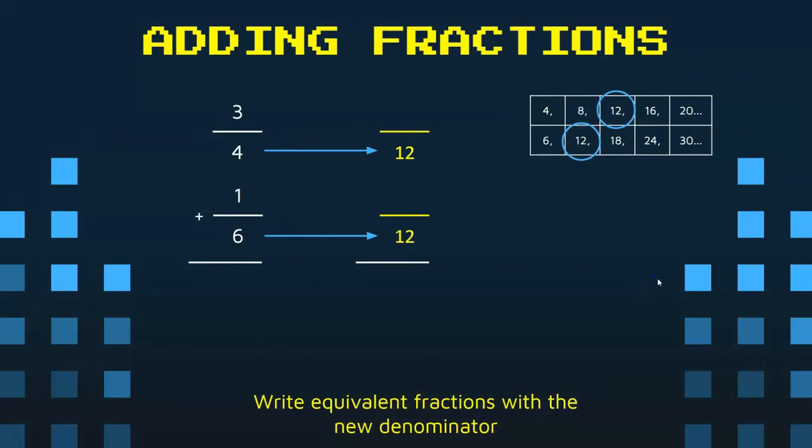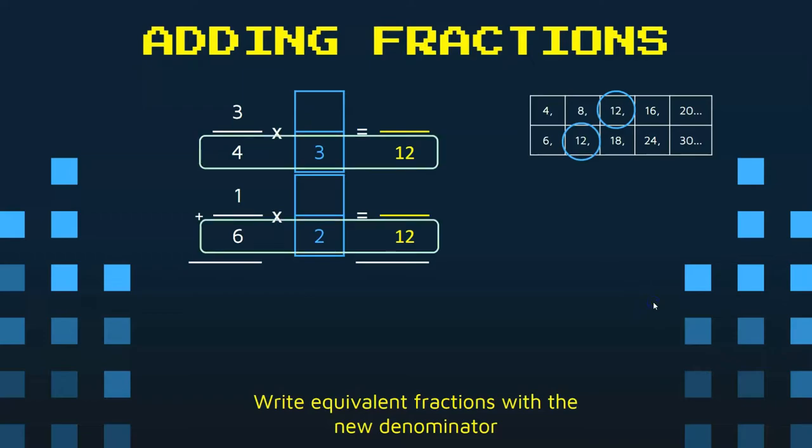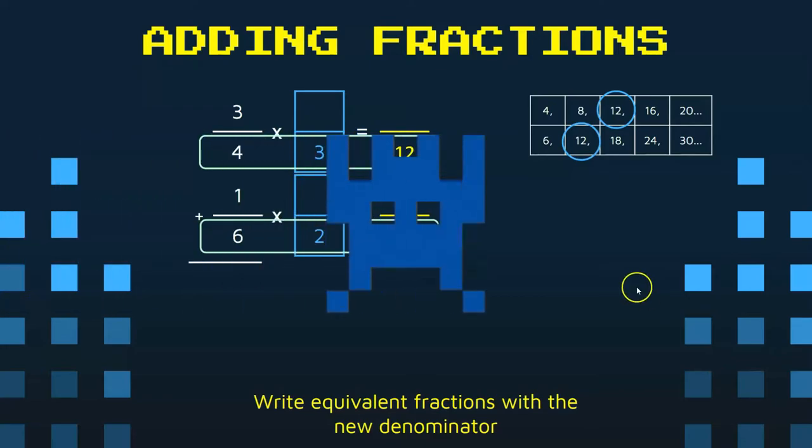And so what that means is I'm going to now find equivalent fractions for the three fourths and the one sixth, and I'm going to use 12 as the new denominator. So we can see here that four times three equals 12, and six times two equals 12. So I need that middle number.